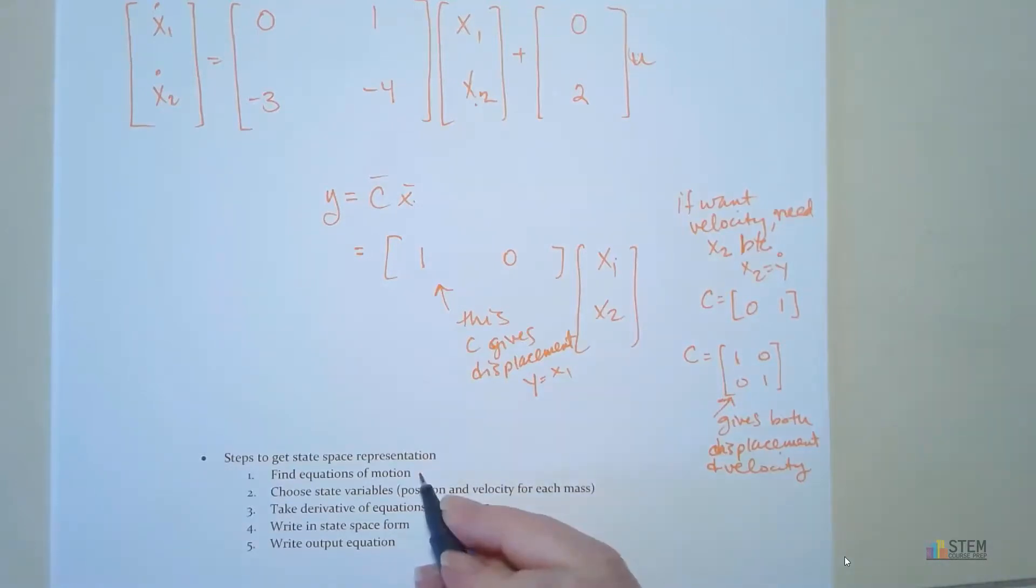First, you want to find your equations of motion. You can do it the long way with the free body diagrams, get the differentials. Or you could use impedance and then kind of go backwards, do the inverse, to get the actual differential equation, however you want to do it.